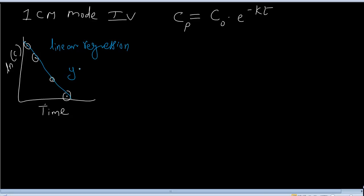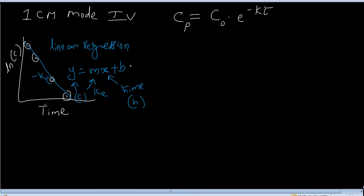So what is the equation for linear regression? y is equal to mx plus b. As you are aware, m is the slope and y is the y-axis which is concentration here. The slope is negative k, that is the elimination rate constant ke. x is time in hours, and b is nothing but the intercept — that is concentration at time zero, C0.